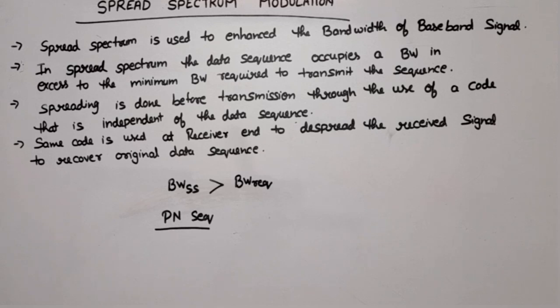Now this spreading that happens by using these codes happens before transmission at the transmitter end. And when we receive the data, before recovering the signal we will despread so that we can recover the original signal.